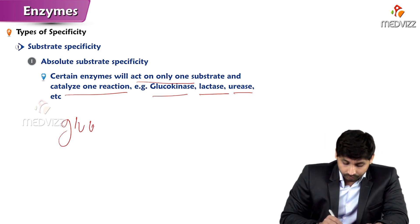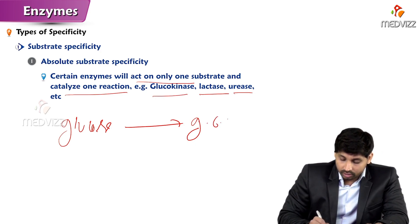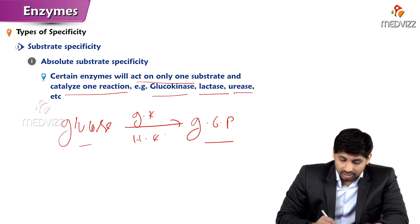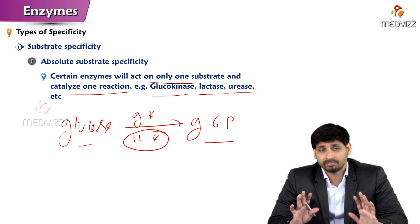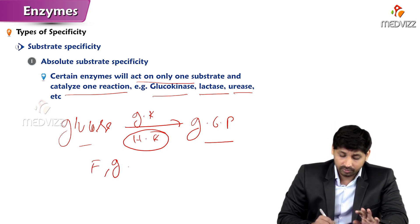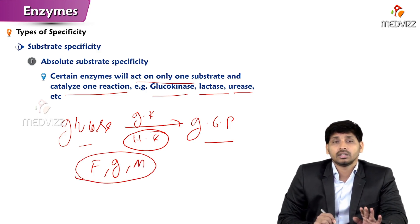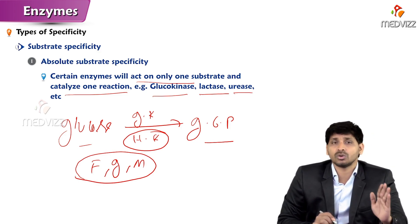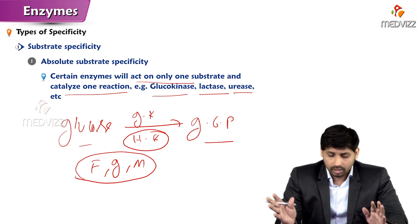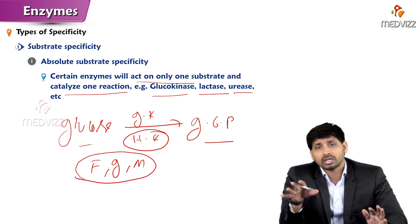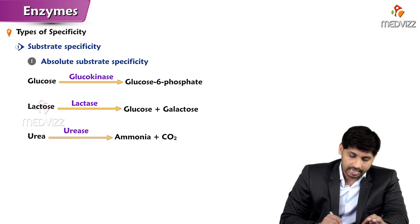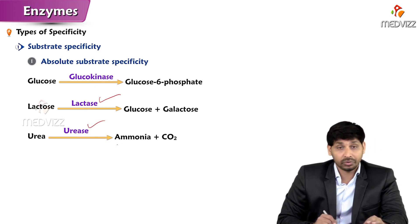Glucokinase converts glucose to glucose 6-phosphate — this is the first reaction of glycolysis. Hexokinase, however, is not absolutely substrate-specific because it phosphorylates not only glucose but also fructose, galactose, and mannose — any 6-carbon carbohydrate. Lactase works only on lactose, converting it to glucose and galactose, not on maltose or sucrose. Urease works only on urea, converting it to ammonia and carbon dioxide.